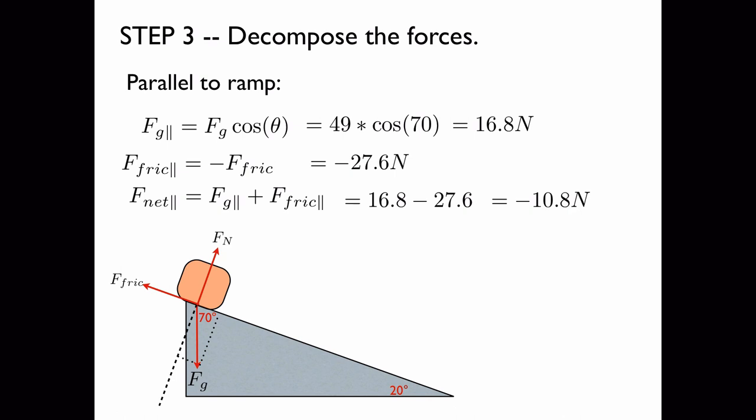It's important that it's a negative here because otherwise the block would keep sliding down the ramp and accelerating and it would never come to a stop. This would happen if, for example, the coefficient of friction were not as high or the incline were steeper or both. But because the net force is negative, the block will eventually come to a stop.